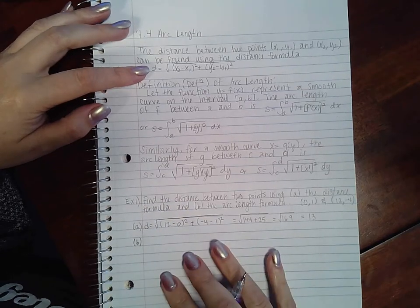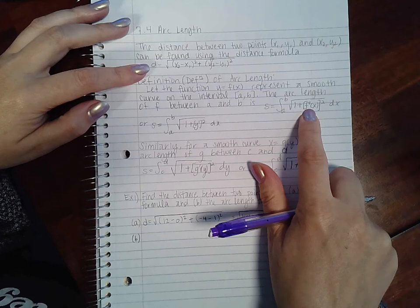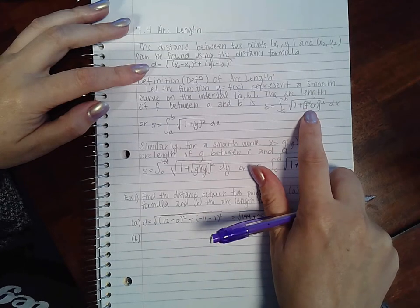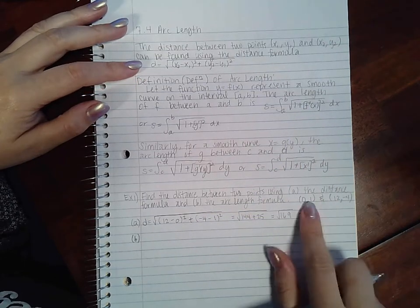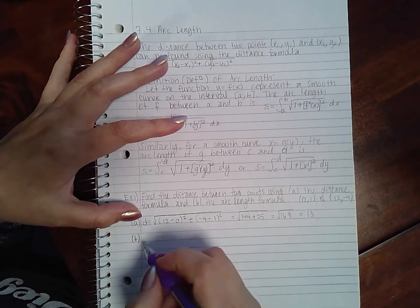Now part B is a little bit harder because for part B I have to have a function here, and then I have to take the derivative of that function. I don't have the function between these two points, but if I were to use the formula to find the equation of the line between those two points...